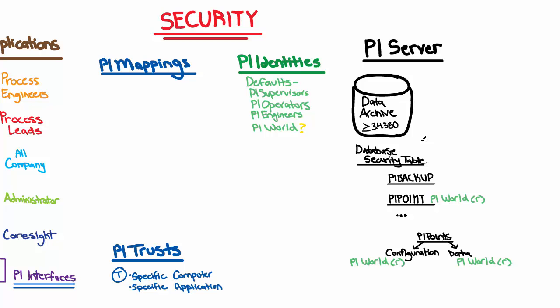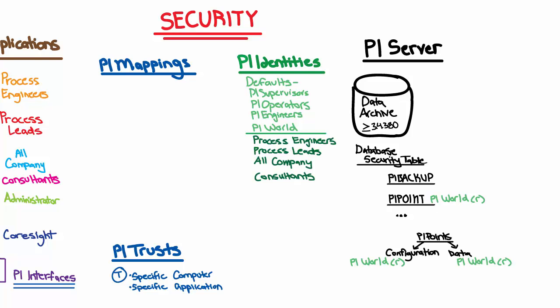For example, let's say we have a company where each employee uses the PI system, but maybe we have some external consultants and we want to very specifically tailor the permissions that these external consultants have. The easiest way to do this would be to create custom PI identities that match up exactly to the user groups in our organization — process engineers, process leads, all company employees, and external consultants. We can create corresponding PI identities for each and disable the default PI World identity.